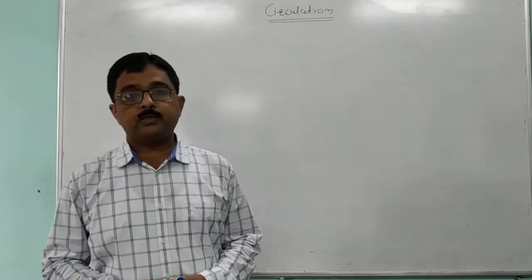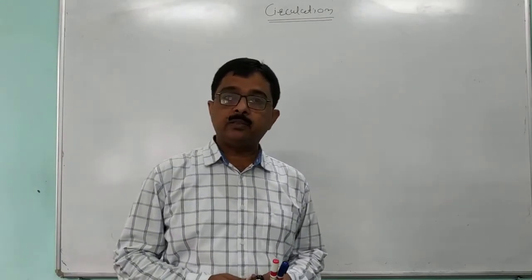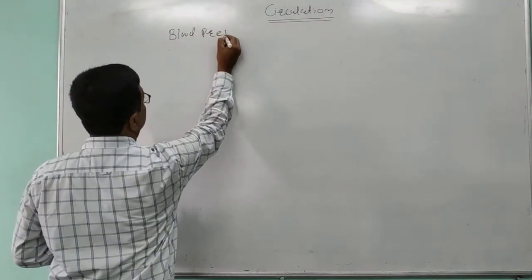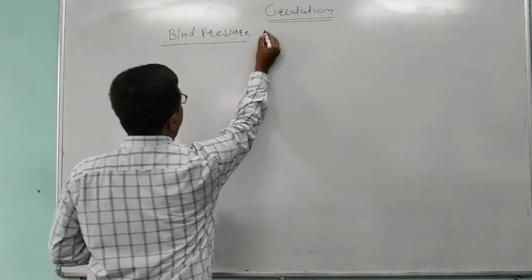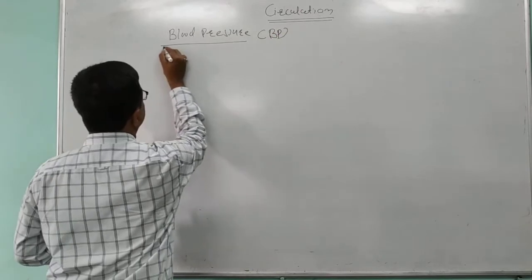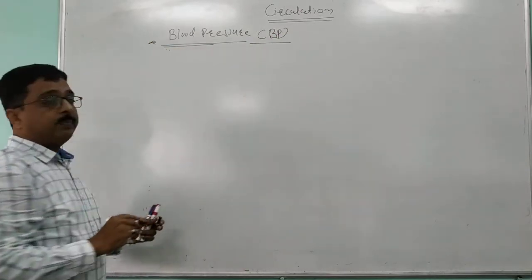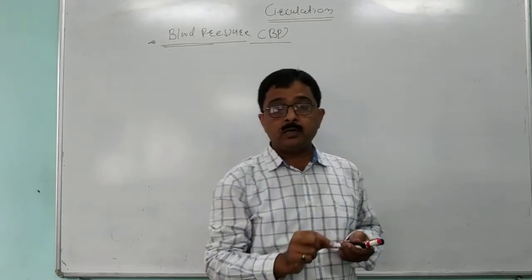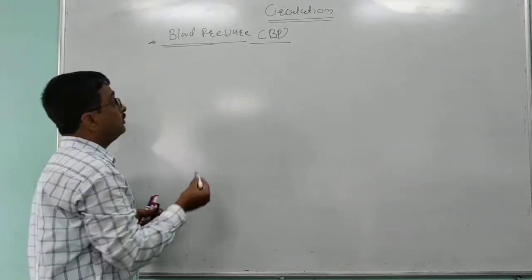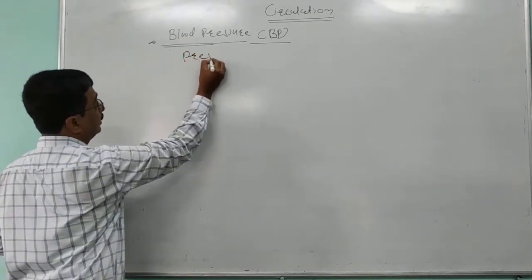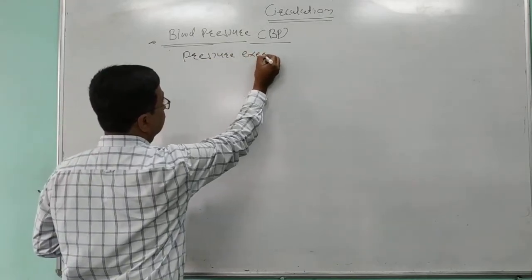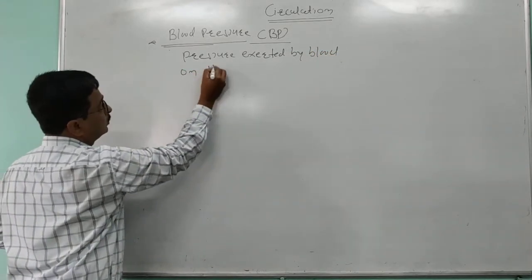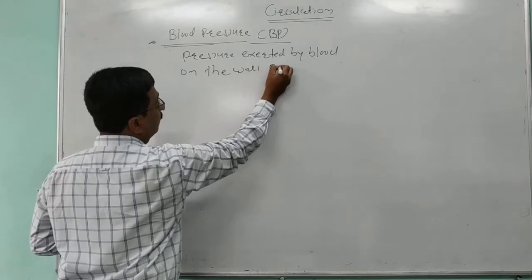In this video, we are going to discuss about blood pressure in human beings. Blood pressure in man, also written in short form as BP, is defined as the pressure exerted by the blood on the wall of blood vessels.